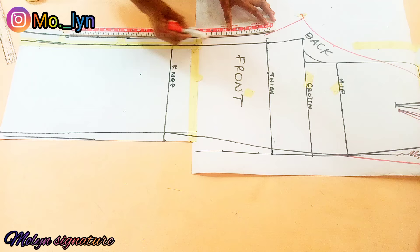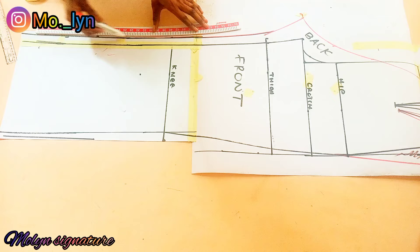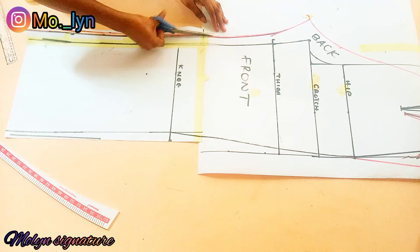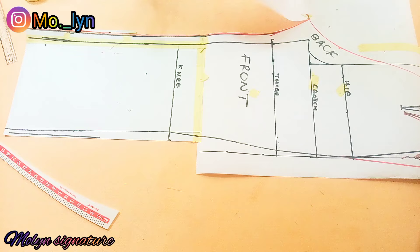If you like you can make it straight; if you like you can curve it the way I did — it's based on choice. Next I'll go ahead and cut it out. Cutting from the back piece will enable me to cut out the back pattern first when cutting on fabric, before trimming out the excess to cut out the front piece.